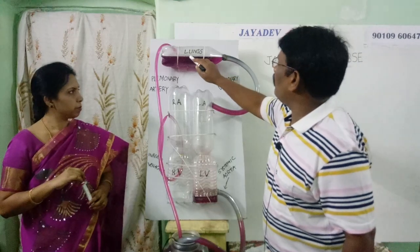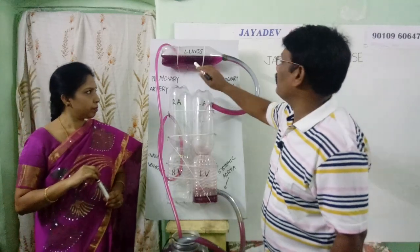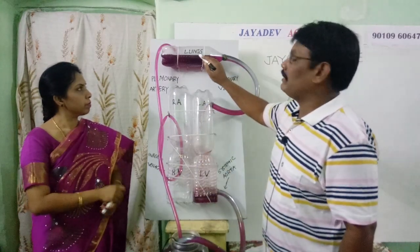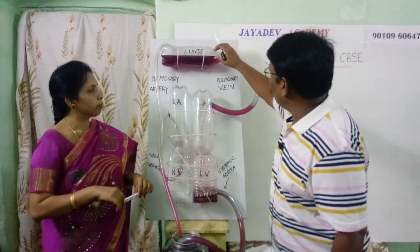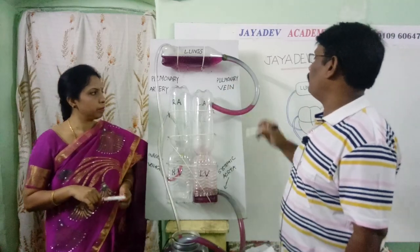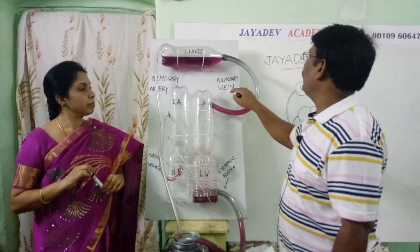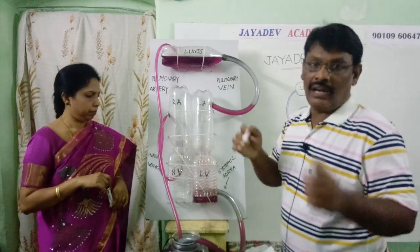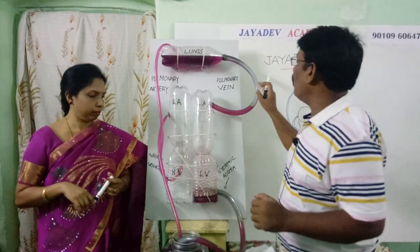The deoxygenated blood reaching the lungs is mixed with oxygen molecules and converted to oxygenated blood — that means purified blood. This purified blood is pumped into one blood vessel called the pulmonary vein. The pulmonary vein receives the oxygenated blood. Here is another exception: veins normally carry deoxygenated blood, but the pulmonary vein carries only oxygenated blood. These two exceptions are very important from an examination point of view.